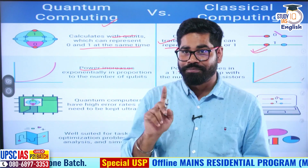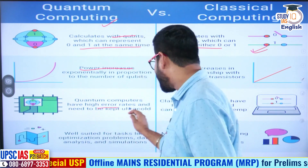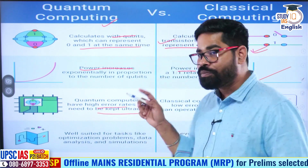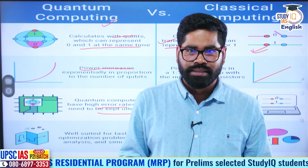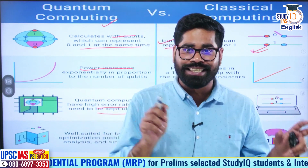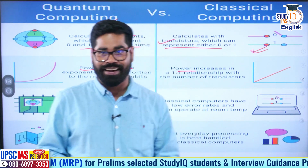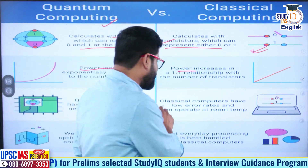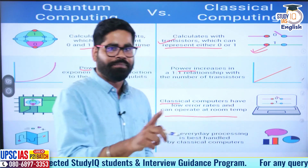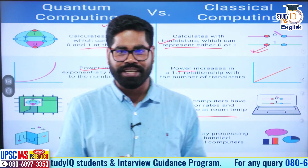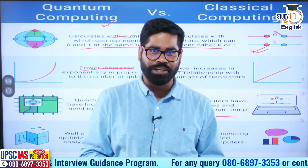Quantum computers have high error rates and they need to be kept at ultra-cold temperatures — they are highly sensitive and must be preserved at those ultra-cold temperatures. Classical computers, on the other hand, have low error rates and can function efficiently at room temperature. That is the advantage of classical computers at this point in time.